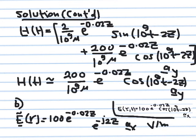Now, to write the phasor of the electric field. Remember, e^(−0.02z) is simply a real constant amplitude factor. The cosine can be written using the real part of e^(j(10^9 t minus 2z)). Factoring out e^(j 10^9 t), what remains is e^(−0.02z) e^(−j2z).